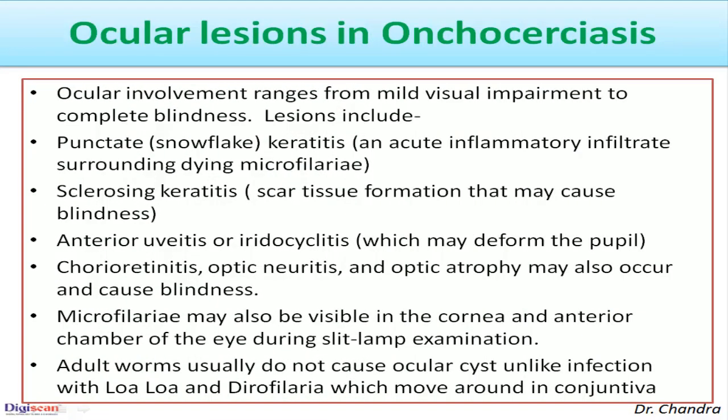Patients may also have lymphedema of the groin, hanging groin, and skin atrophy. Ocular involvement ranges from mild visual impairment to complete blindness. Lesions include punctate keratitis, which is an acute inflammatory infiltrate surrounding dying microfilariae. Sclerosing keratitis due to scar tissue formation may cause blindness. Anterior uveitis or iridocyclitis may deform the pupil. Chorioretinitis, optic neuritis, and optic atrophy may also occur and cause blindness. Microfilariae may be visible in the cornea and anterior chamber during slit-lamp examination.